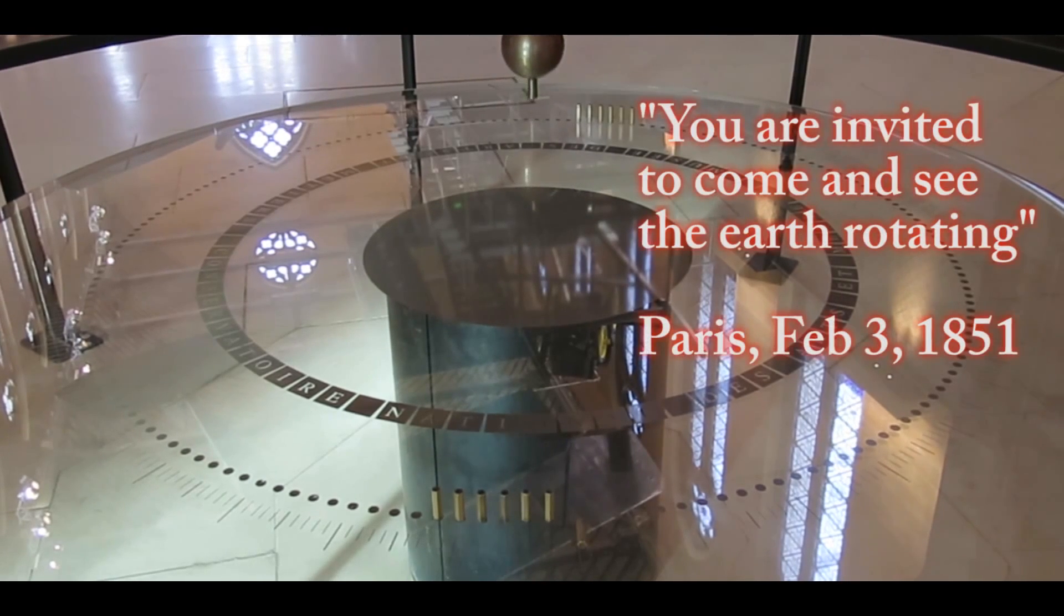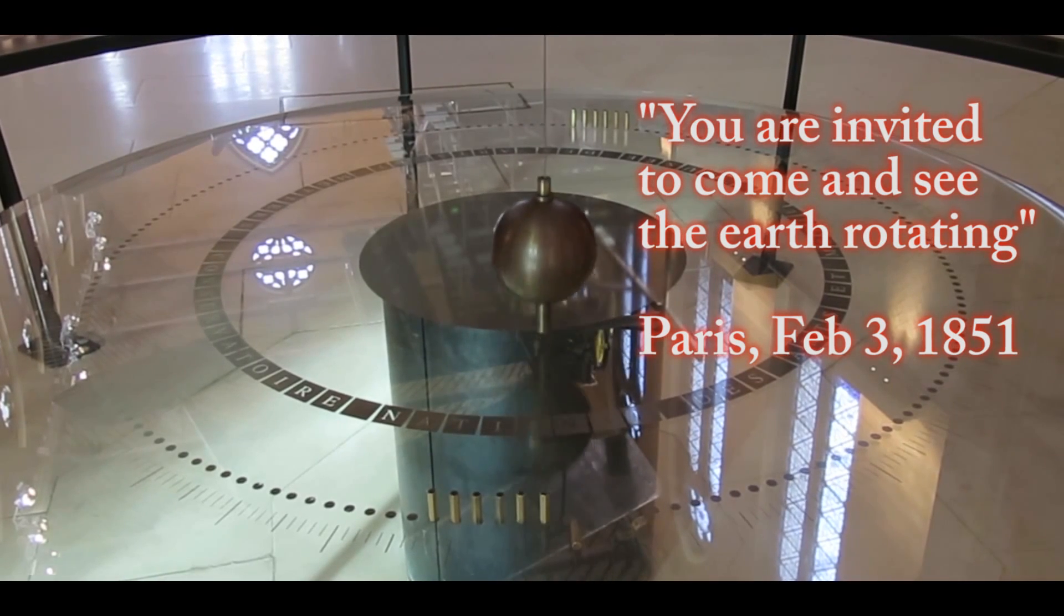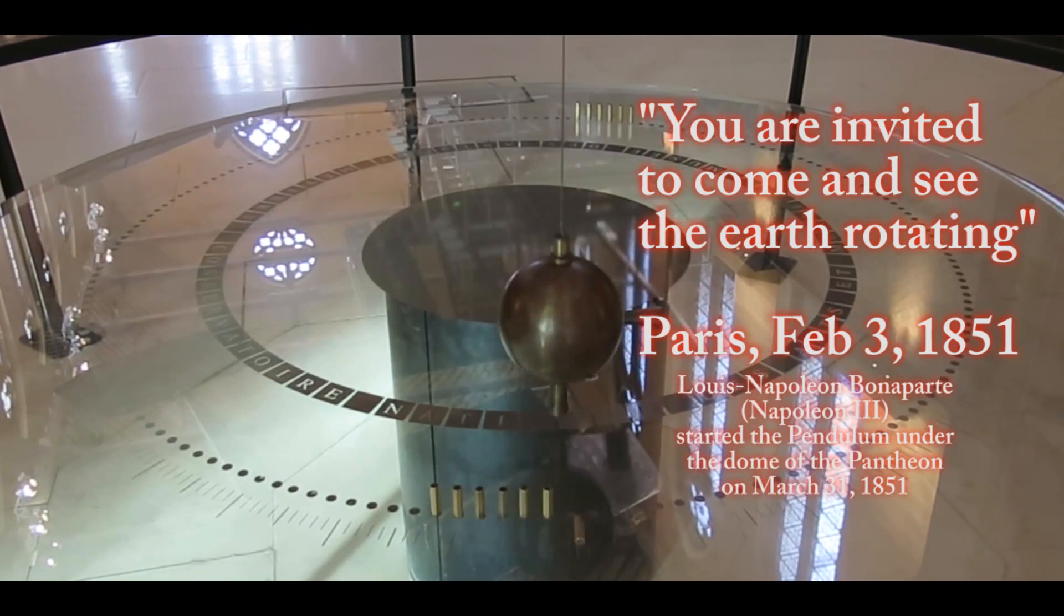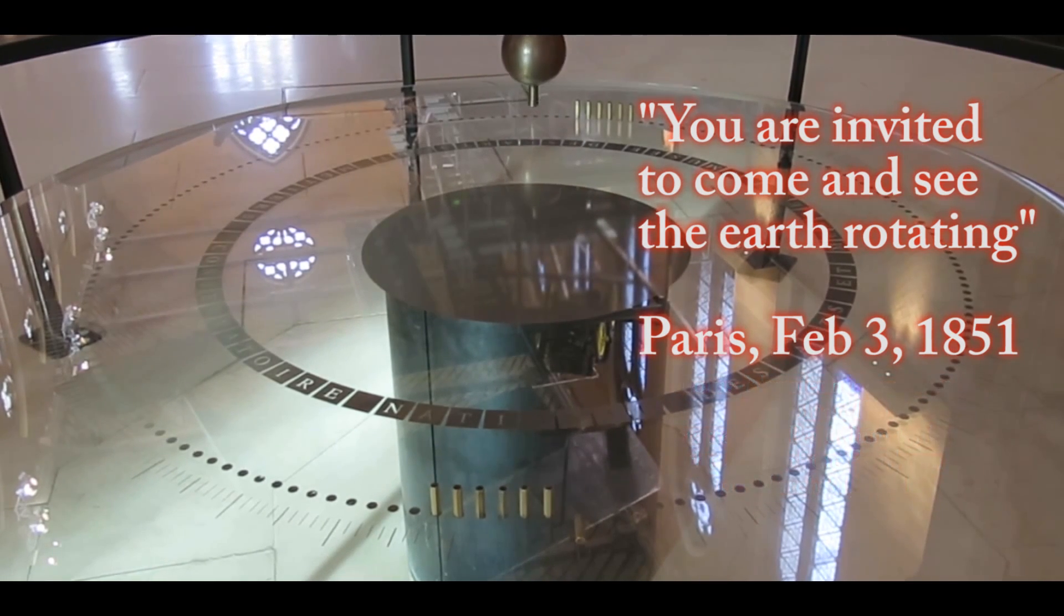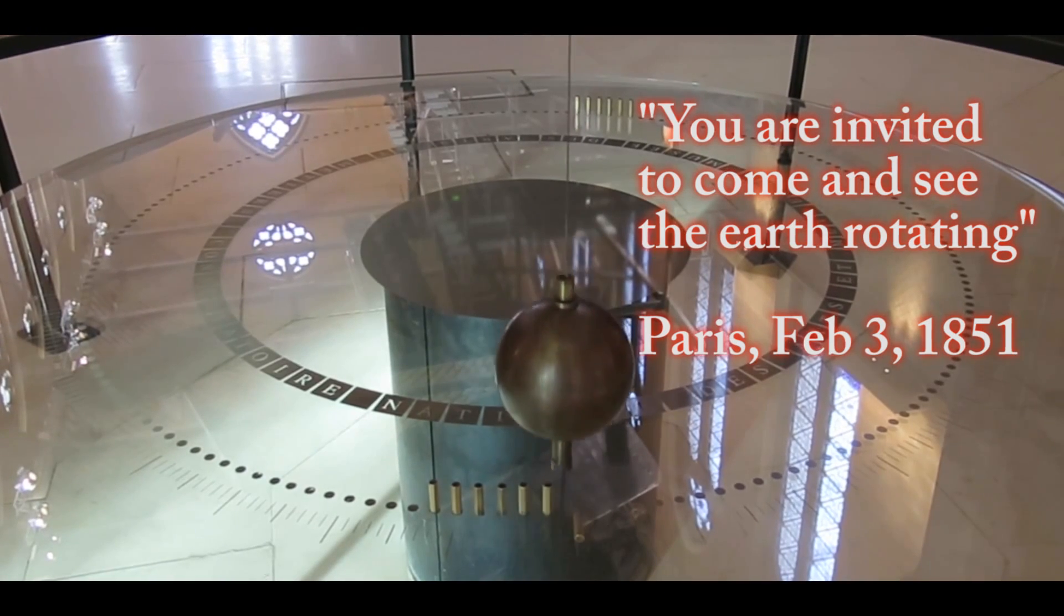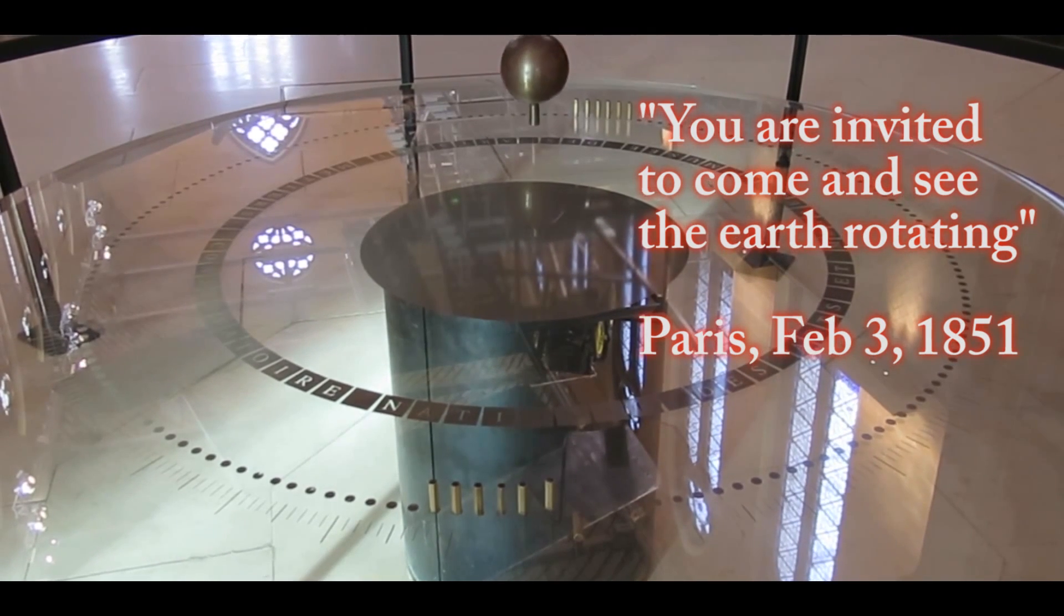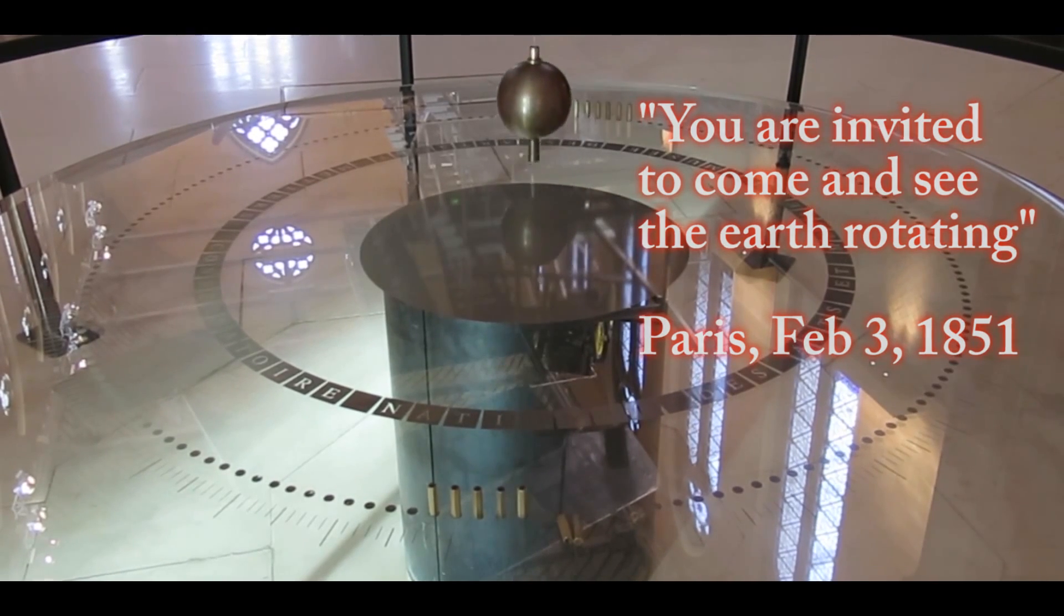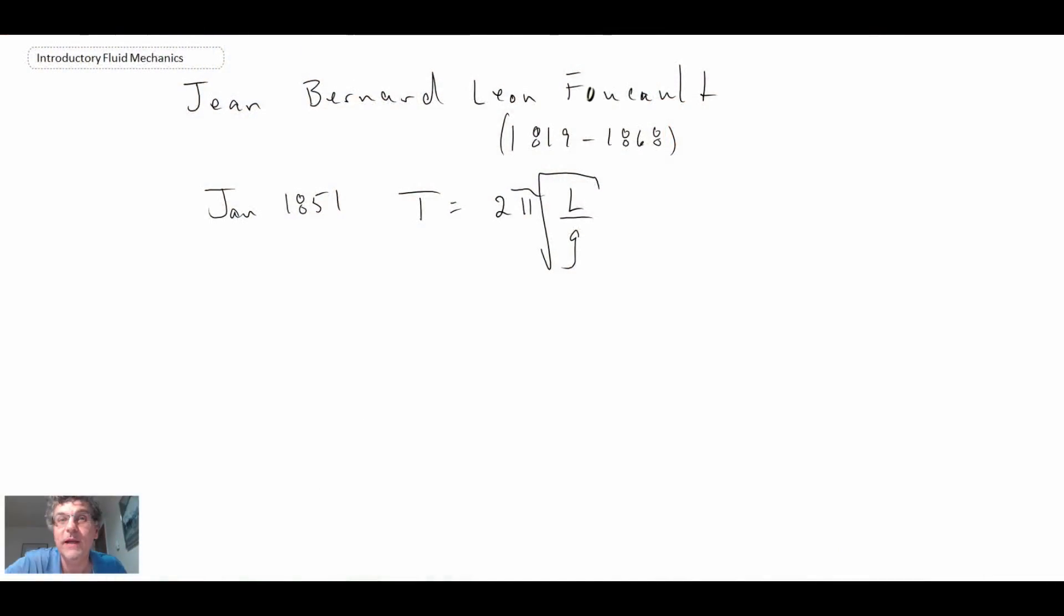Now in February 3, 1851, they put out an invitation saying you are invited to come and see the earth rotating. And the pendulum was actually started by Napoleon, Napoleon Bonaparte. And what he did is he pulled it back and he started it. And you can see the presence of the earth rotating. Watch this. So they put little pieces of brass in the way of the pendulum. And as the earth rotates, the pendulum doesn't change orientation. And there you go. It hit the piece of brass. And there you see evidence that the earth does indeed rotate. And that was quite the thing in the early 1850s in Paris. And after that, there were pendulums all over the world repeating that experiment.